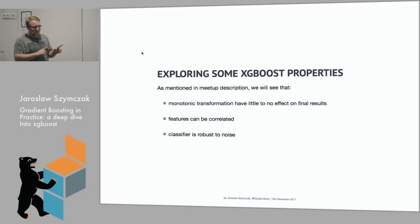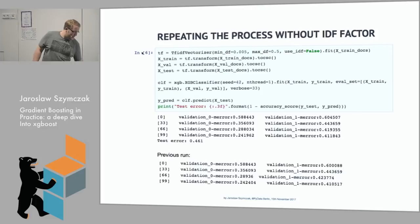In meetup description, I promised that I'll show you a couple of XGBoost features. One, it doesn't really change the way how it classifies things if you do monotonic transformations. Second, features can be correlated. And third, you can add some random noise and it will still be as good. Let's check if it's true.